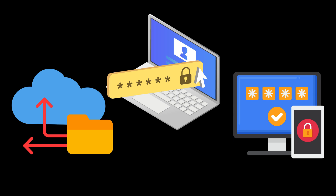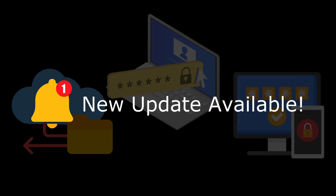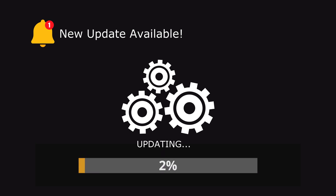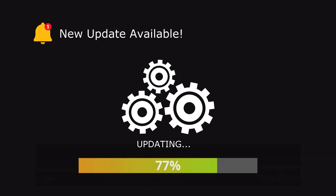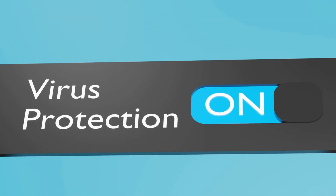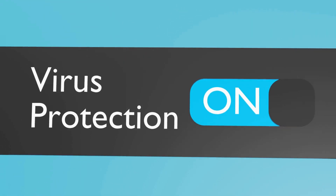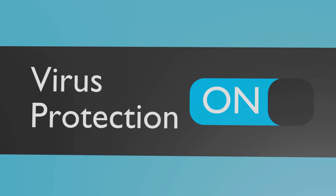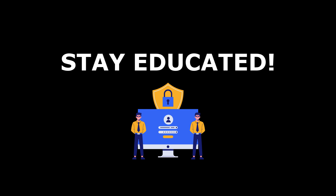What about keeping my software up to date? Absolutely. Keeping your software and operating systems up to date with the latest security patches is crucial. It's also important to be cautious with email attachments and links, especially from unknown sources. Install and maintain up-to-date antivirus and anti-malware software. Educating yourself and others on cybersecurity best practices is one of the best ways to stay protected.